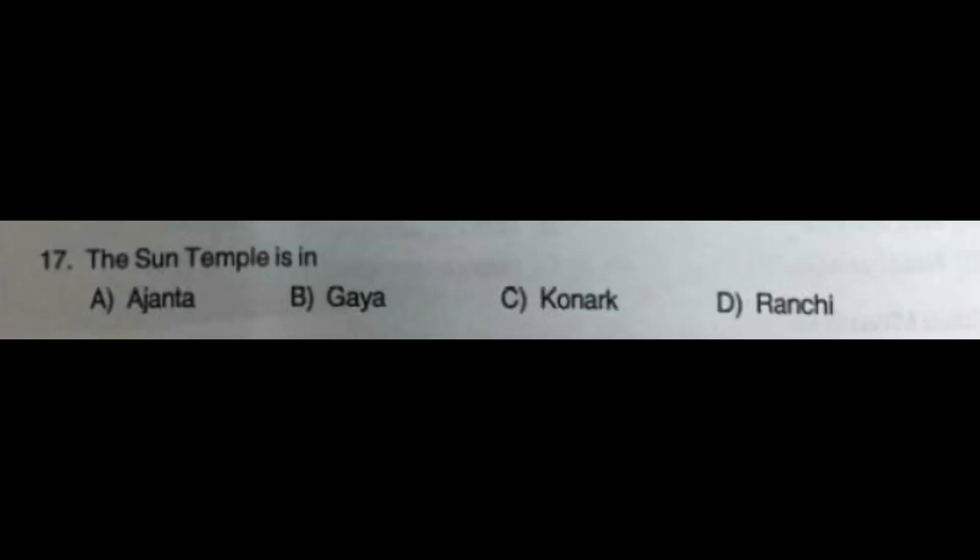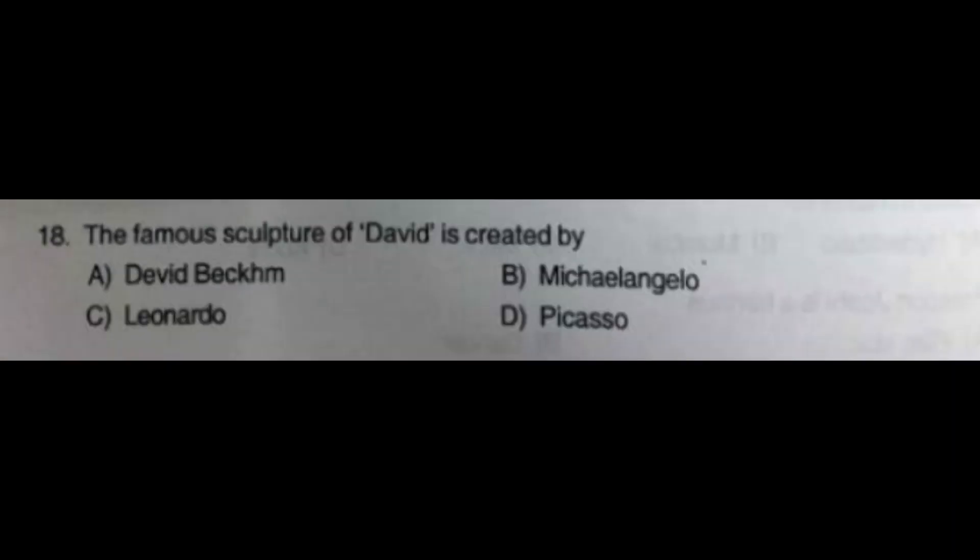Question number 17: The Sun Temple is in — option A: Agra, option B: Gaya, option C: Konark, option D: Ranchi. The correct answer is option C: Konark. Question number 18: The famous sculpture of David is created by — option A: David Beckham, option B: Michelangelo, option C: Leonardo, option D: Picasso. The correct answer is option B: Michelangelo.